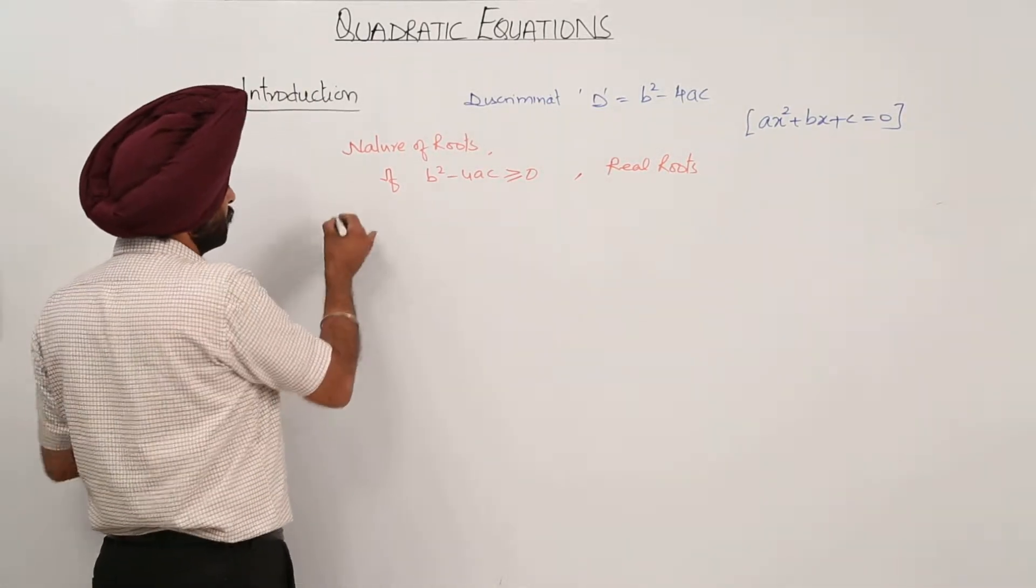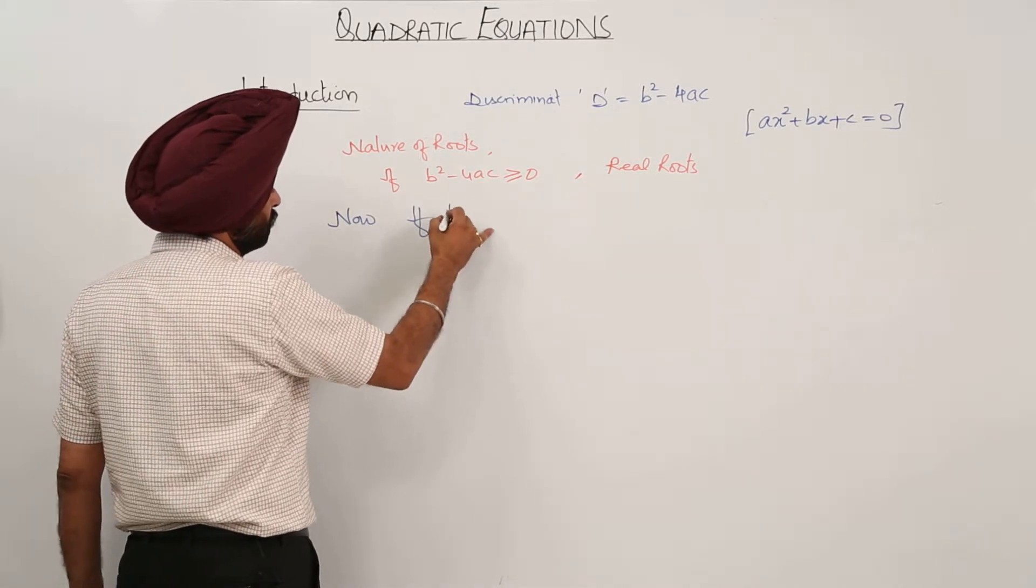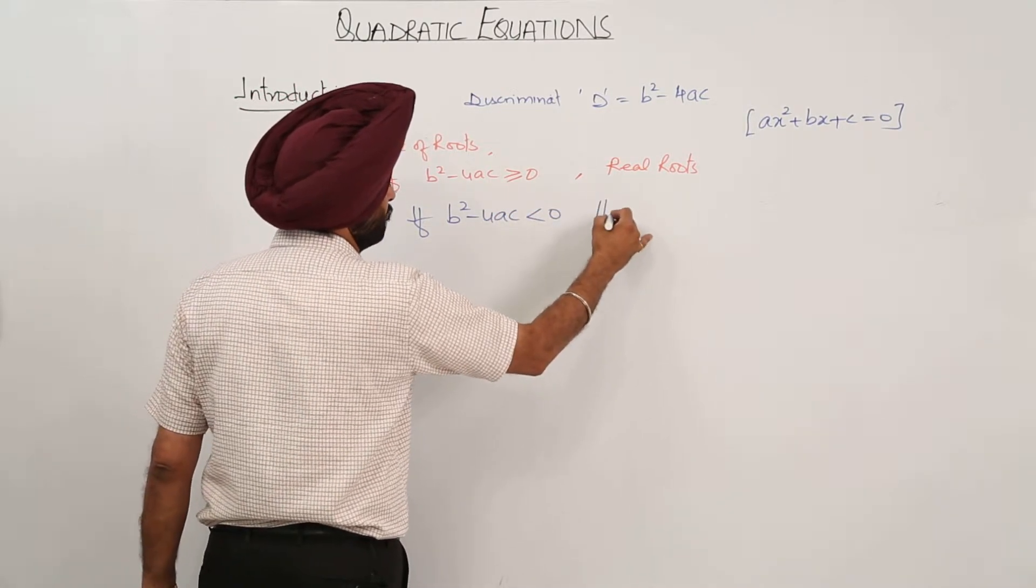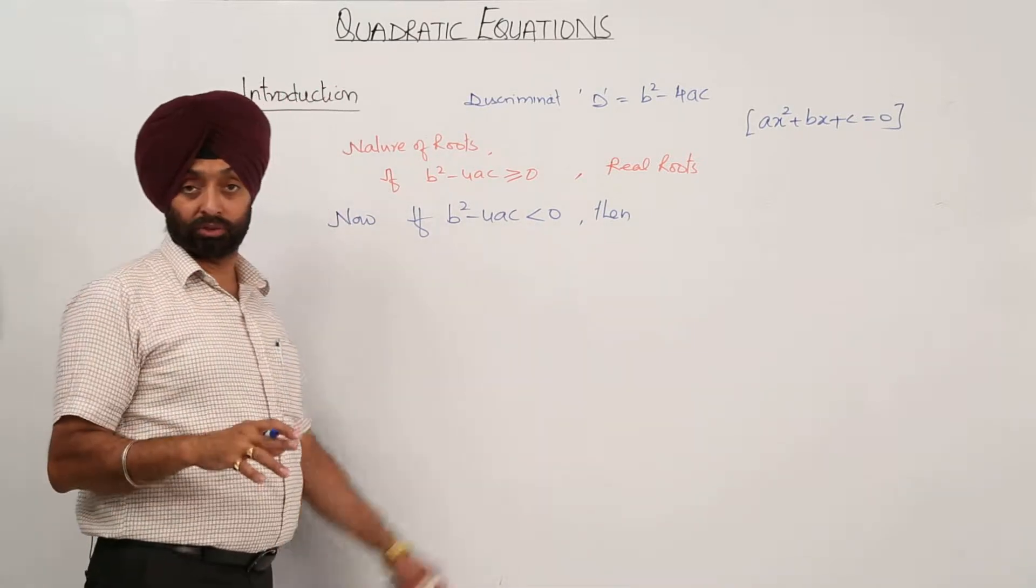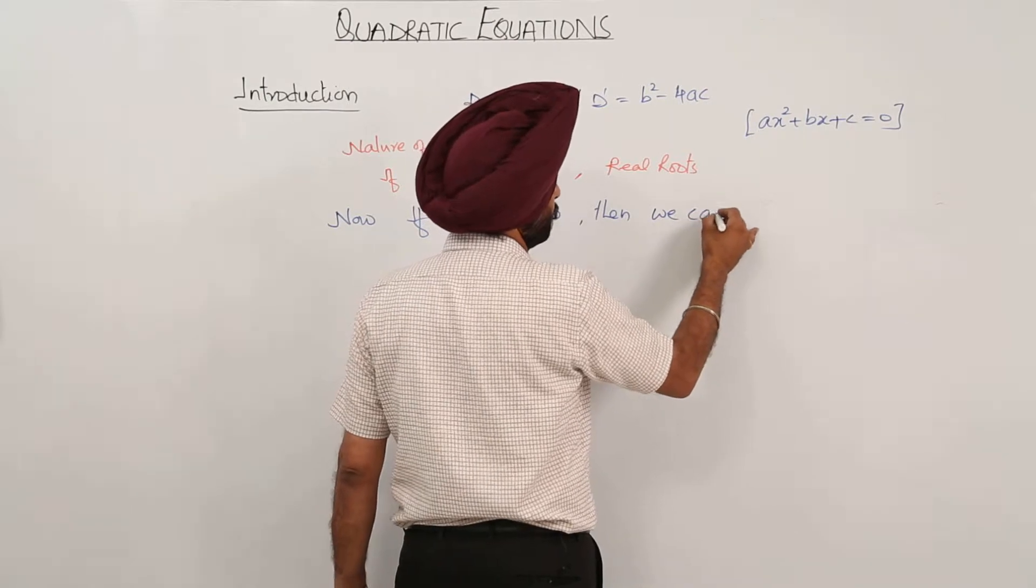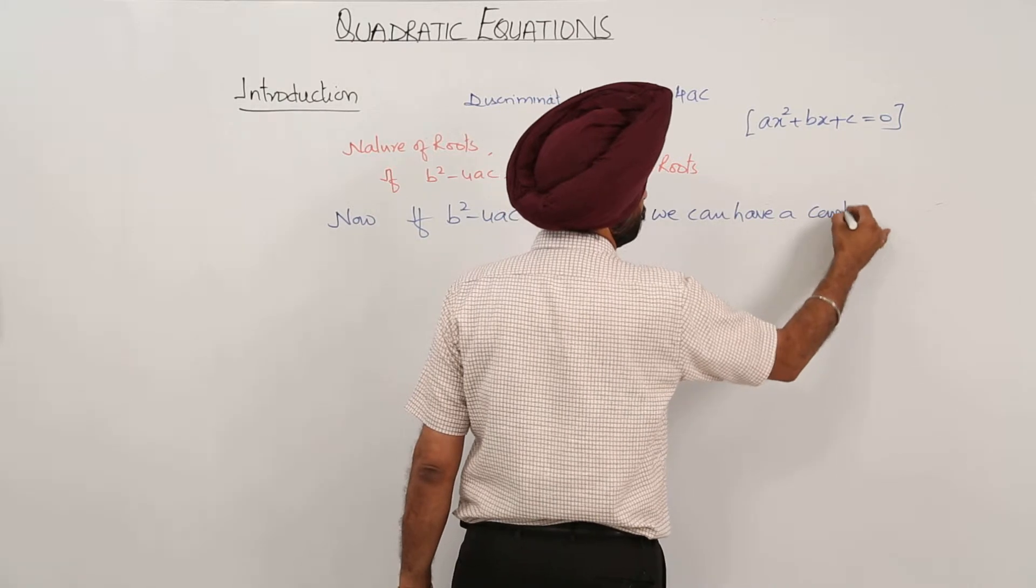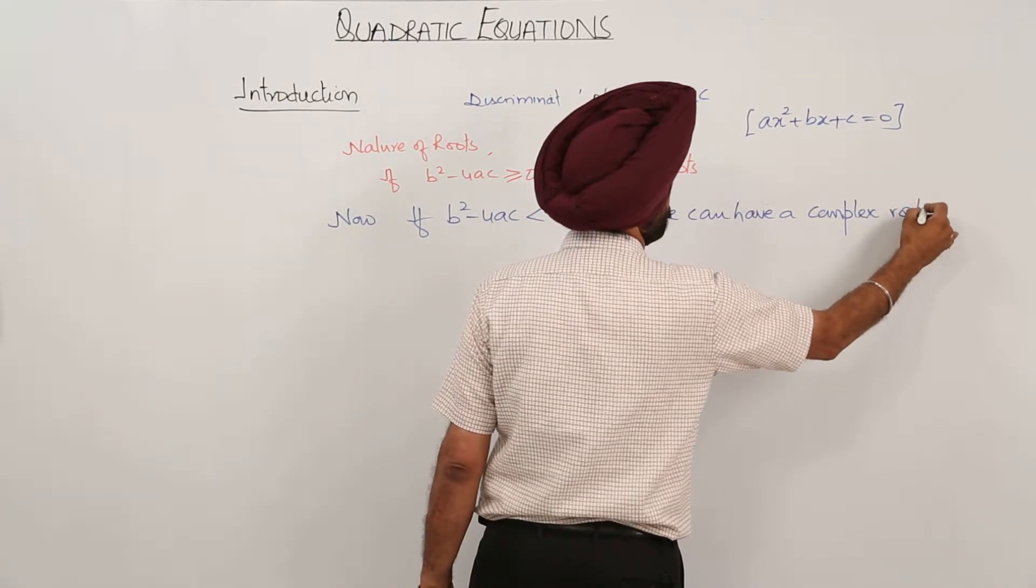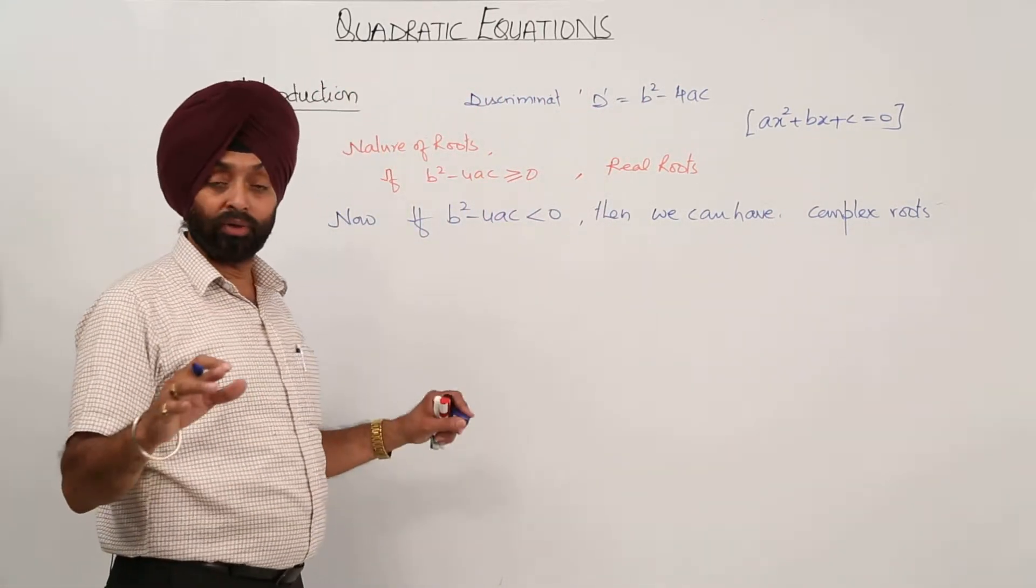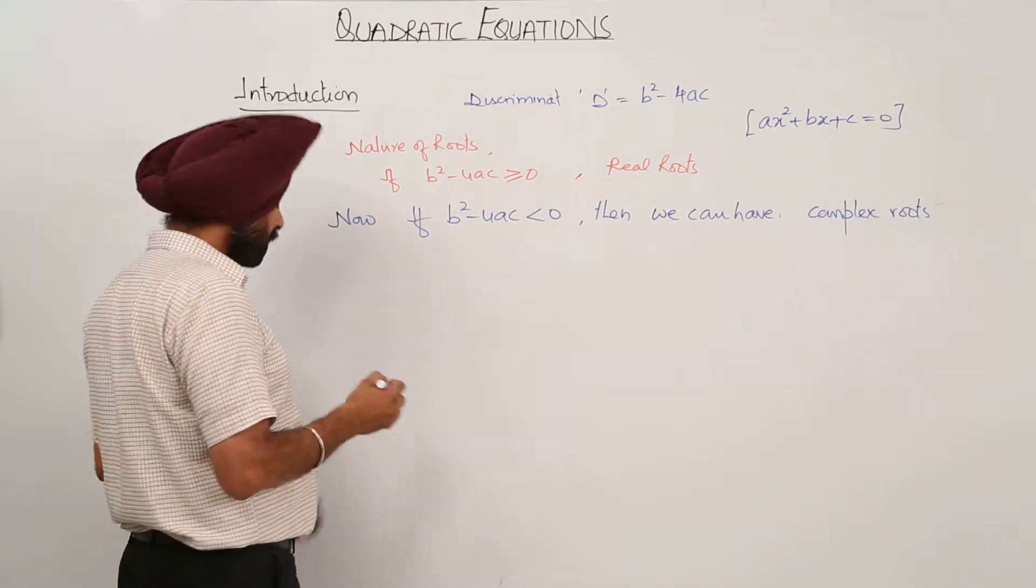Now in this session, in this class, we are going to do quadratic equation but with the third nature. That was what? If b square minus 4ac is less than 0, so then we are not going to write that no real roots. We will be writing then we can have complex roots. Because now we are aware with the complex number, we are aware with the chapter of complex number now.